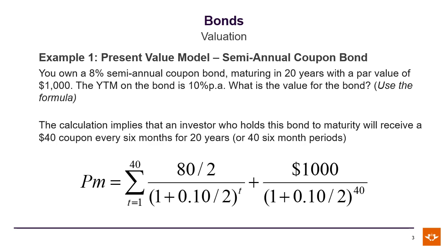With an 8% coupon, the coupon is $80 per annum. But because this coupon is paid semi-annually, every 6 months the investor will receive $40. Because this bond has a 20-year maturity term, there will be 40 coupon payments made — there are two 6-month periods in every year. So the formula is 80 over 2 to give us our $40 coupon payment.